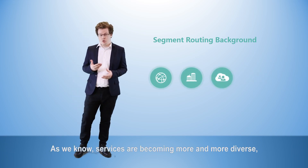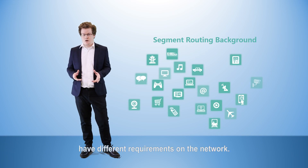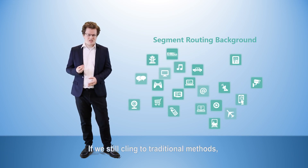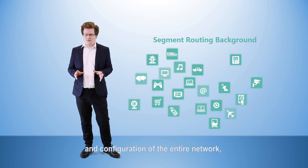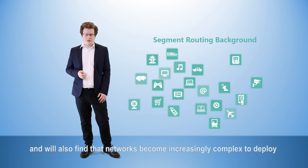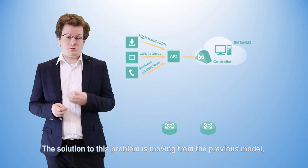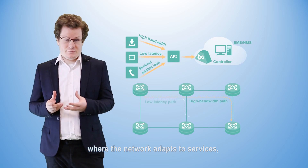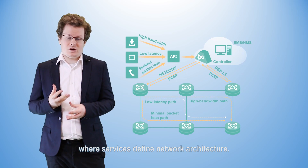As we know, services are becoming more and more diverse, and different types of services naturally have different requirements on the network. If we still cling to traditional methods and continue to merely passively adjust the architecture and configuration of the entire network, then we can't meet the requirements of today's rapidly changing services. We'll also find that networks become increasingly complex to deploy and difficult to maintain. The solution is moving from the previous model, where the network adapts to services, to the service-driven network model, where services define network architecture.